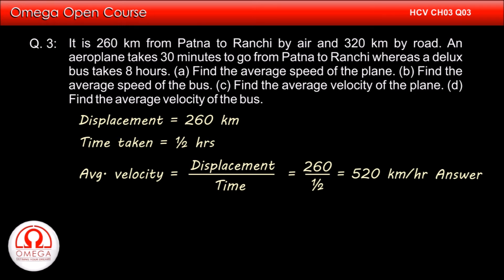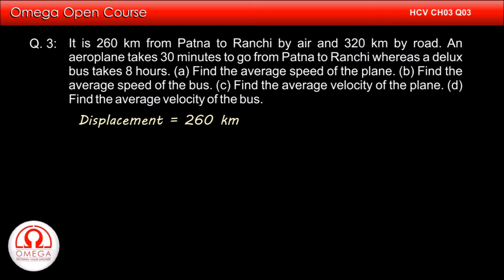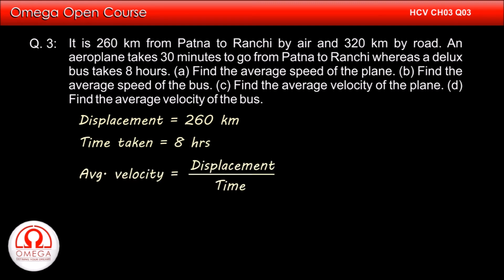As we have discussed, the displacement from Patna to Ranchi is the same as the distance travelled by the plane. The displacement of the bus when it travels from Patna to Ranchi must also be equal to this displacement. Thus, the displacement of the bus is 260 km and time taken is 8 hours. Therefore, its average velocity is 260 divided by 8, which equals 32.5 km per hour. This is the answer to part D of the question.